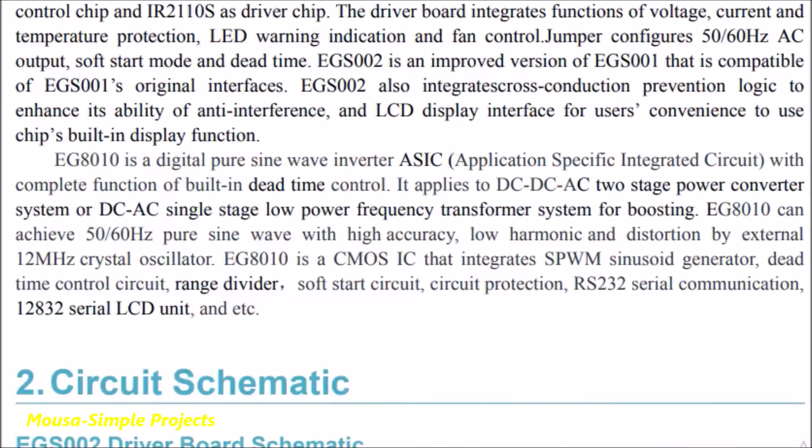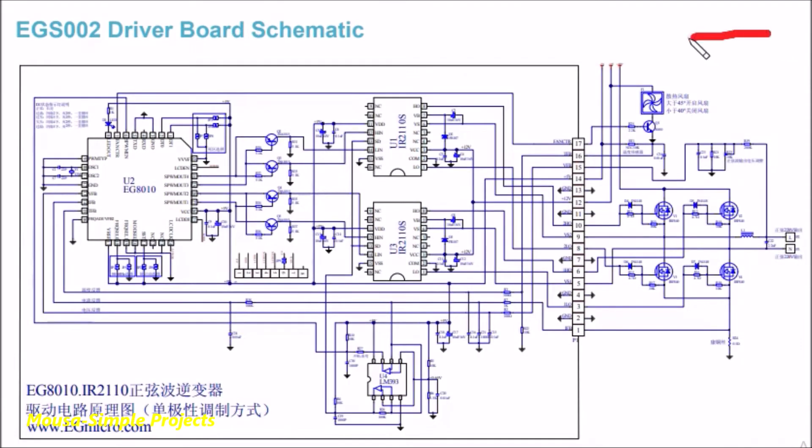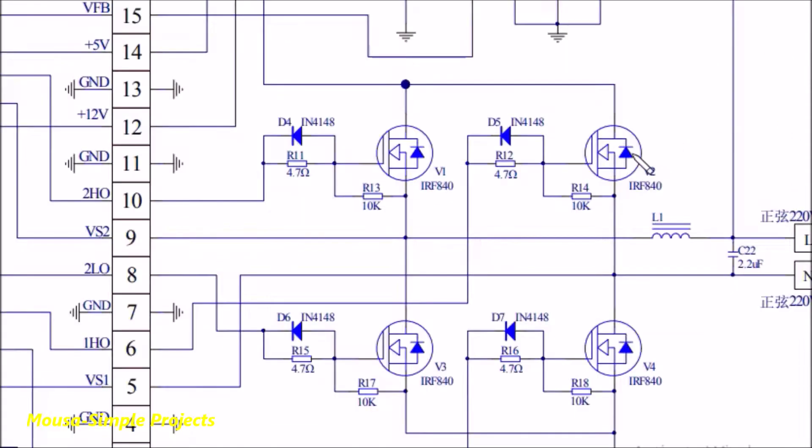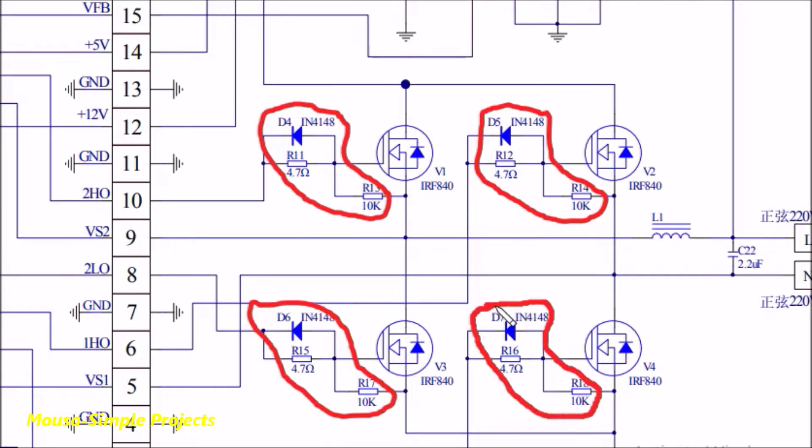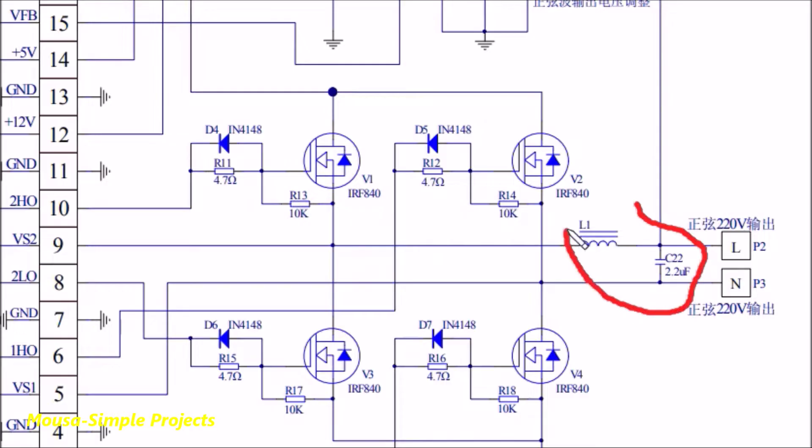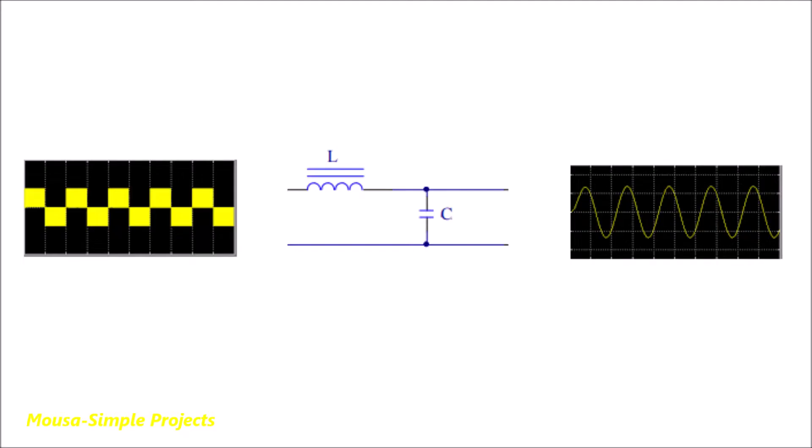In the datasheet of this driver board, you can find how to connect the components together. You just need a few resistors and diodes beside the MOSFETs. The inductor and capacitor are used to filter out the SPWM and convert it to pure sine wave.